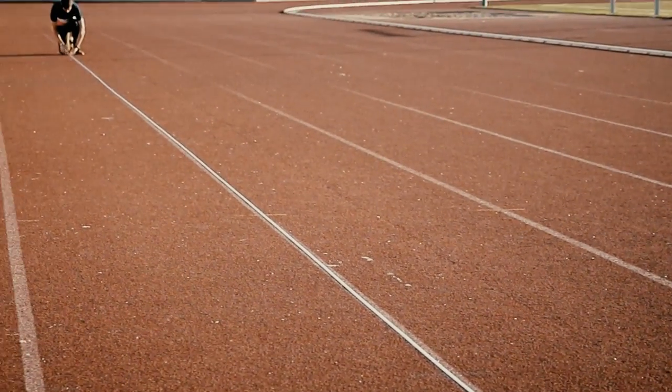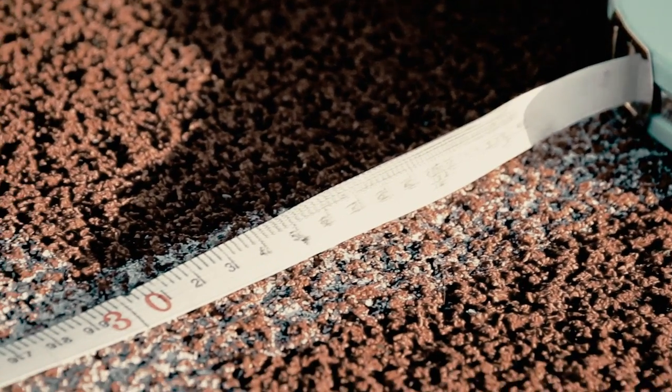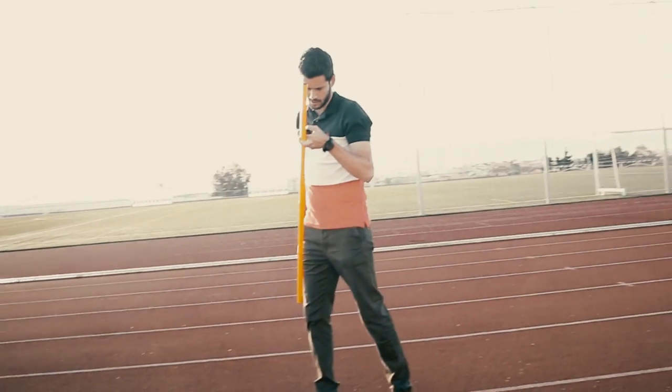In a 30m track the markers have to be located at 5, 10, 15, 20, 25 and 30m.